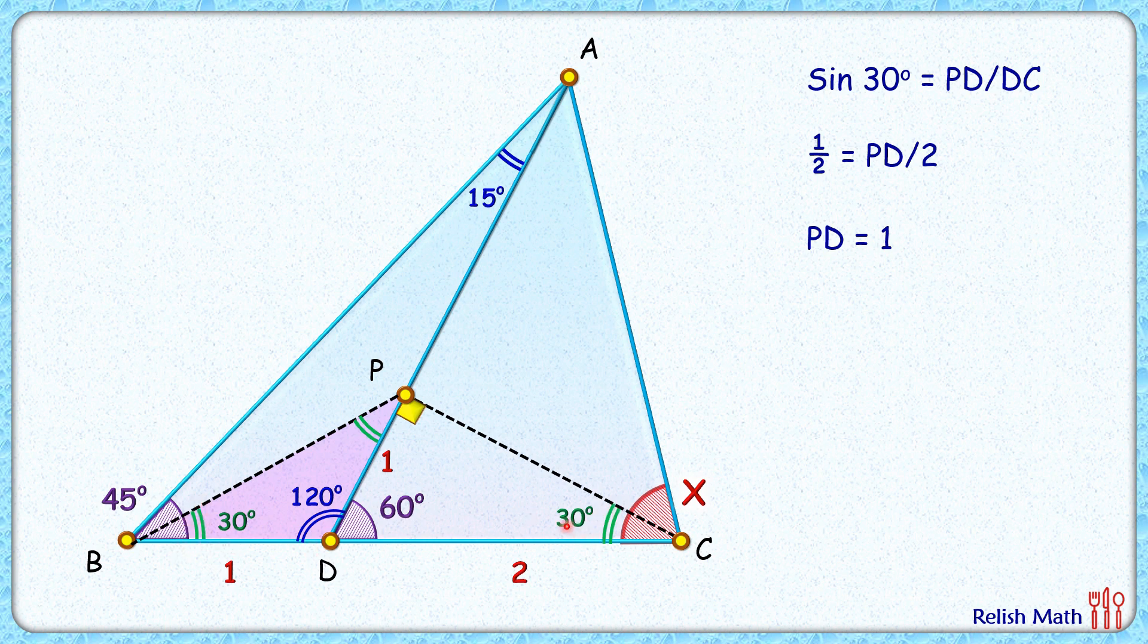That's the interesting part: PB length and PC length will be equal. Now proceeding further, this angle here will be 45 minus 30, or 15 degrees.